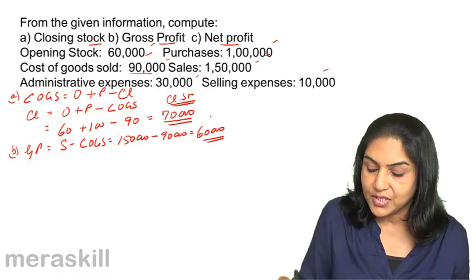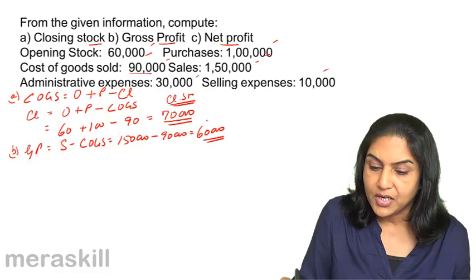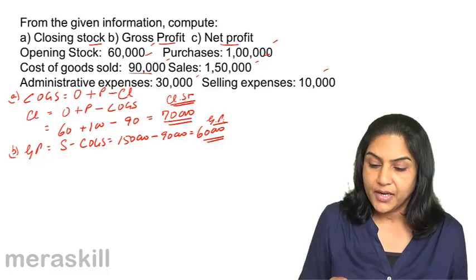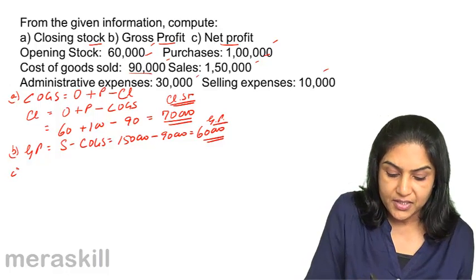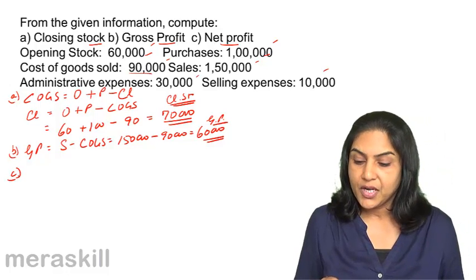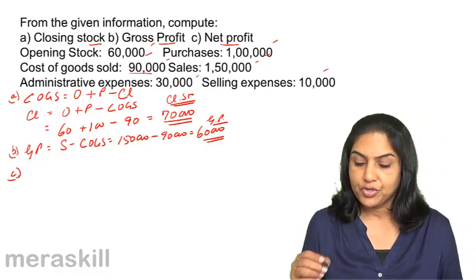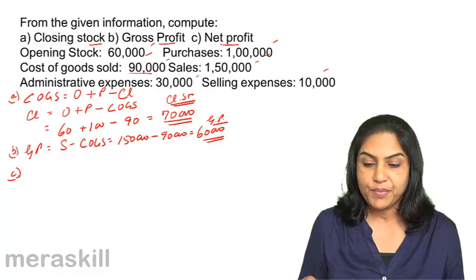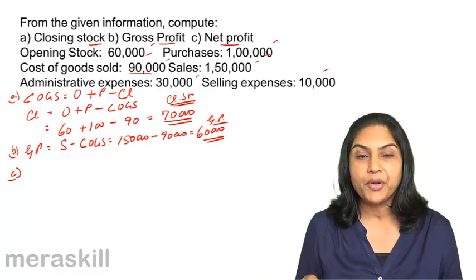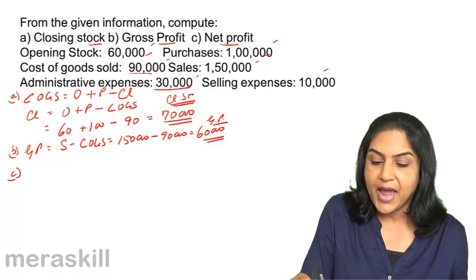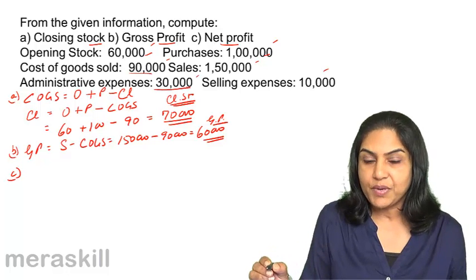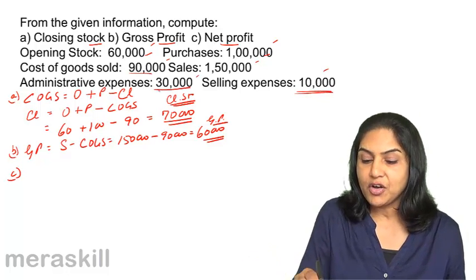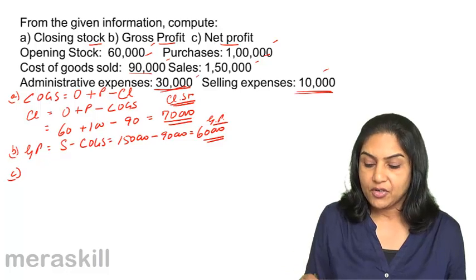So, 60,000 is the gross profit. Next, we need to find net profit. Net profit should be gross profit minus the operating expenses. The operating expenses given are: administrative expenses of 30,000 and selling expenses of 10,000.